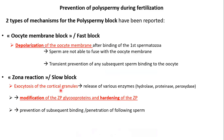We will have an exocytosis of the cortical granule content, which releases various enzymes including hydrolase, proteinase, and peroxidase. Those enzymes play a role in modifying the zona pellucida glycoproteins and in the hardening of the zona pellucida. Once we have the exocytosis of the cortical granules and their enzymes are released into the perivitelline space, those enzymes act on the zona pellucida and induce modifications in its glycoproteins and induce its hardening.